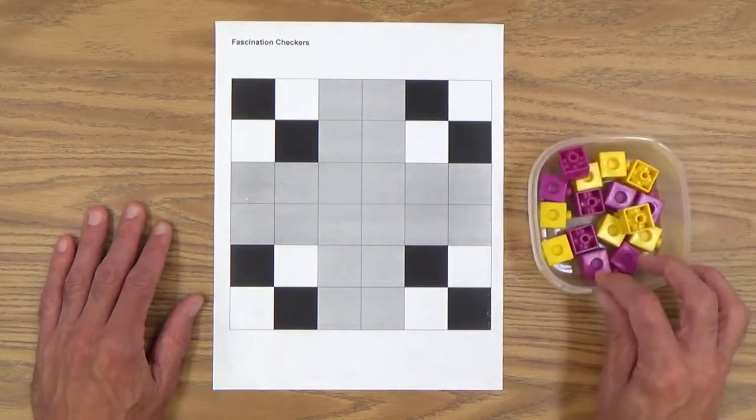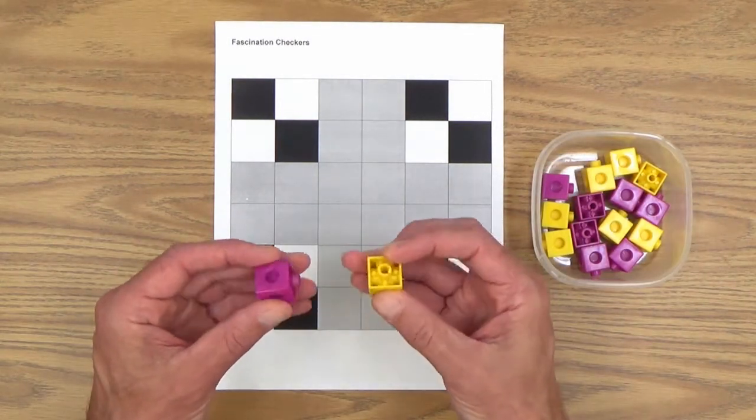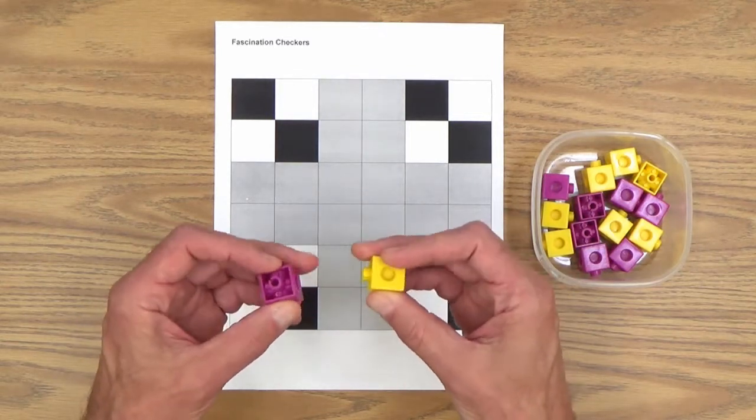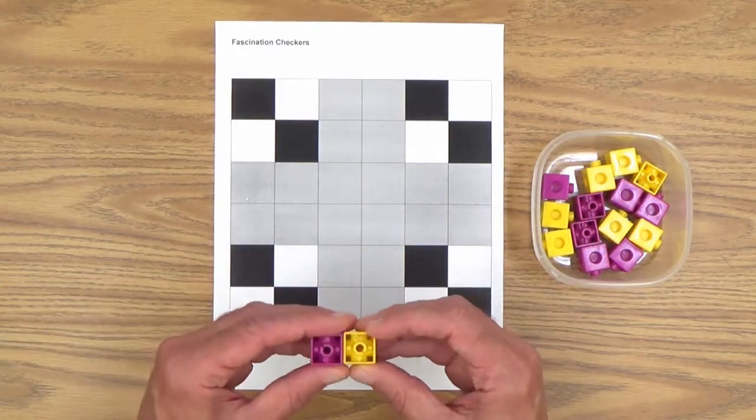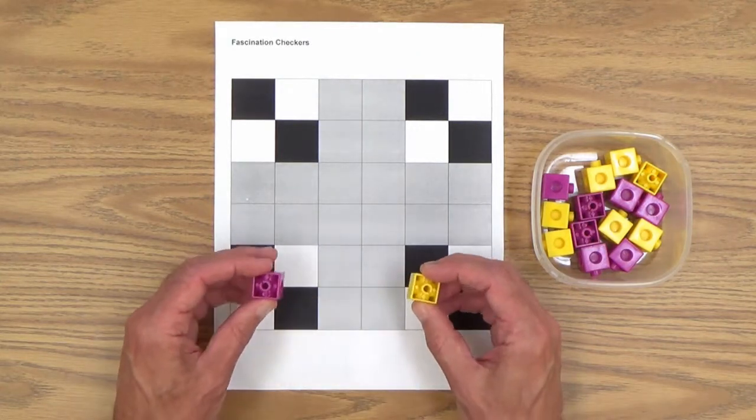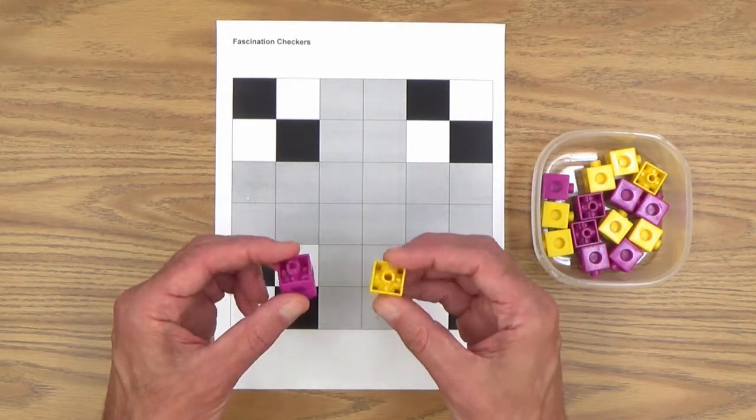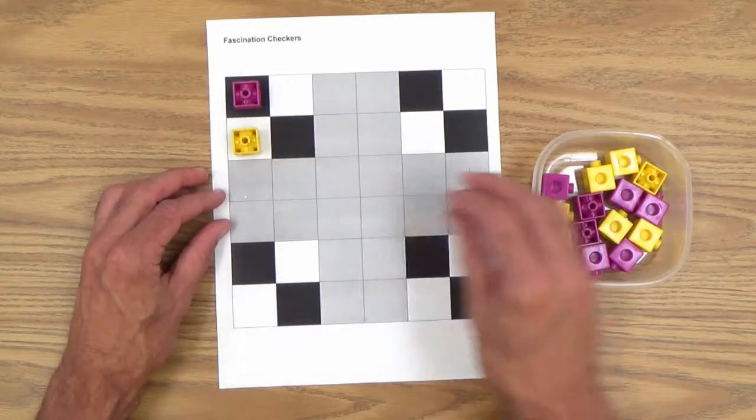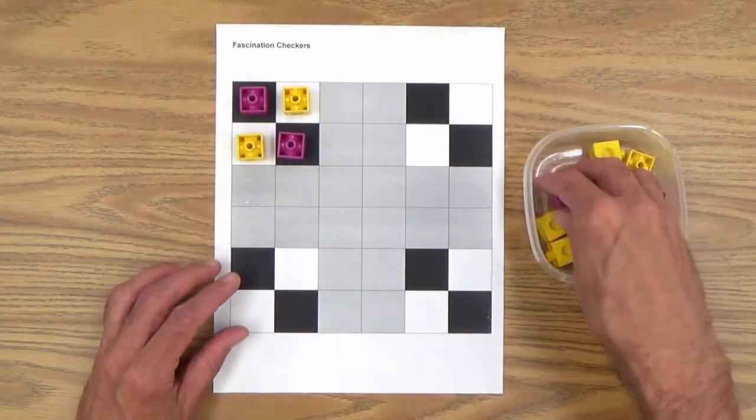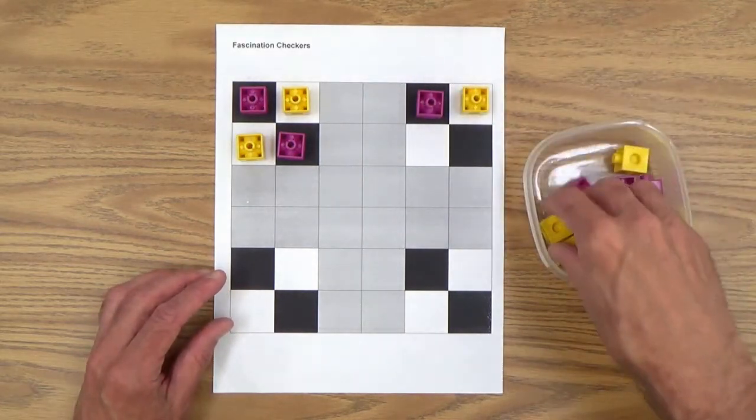So I'm going to be using, because this is what I had, these Unifix cubes, two different colors. And these work just fine as game pieces. Whatever you have for game pieces is good. You might have fancy ones. You might want to use coins, although those are kind of hard to pick up. That's why I like these. They're easy to pick up and move around. So let me place all these on the board and show you how to set up the fascination checkers board.